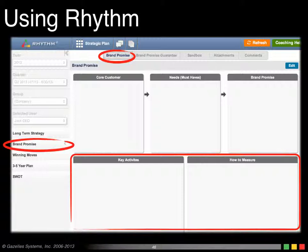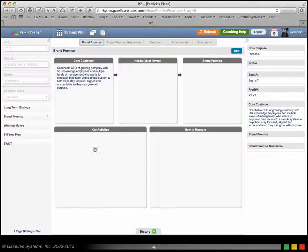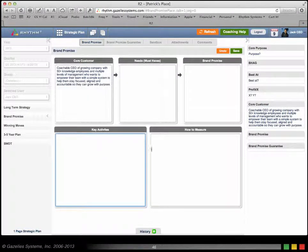In Rhythm, it's in the same area. Let me bring back the Rhythm screen so you can see what I'm referring to. It's right down here. You click on your key activities and you can document that, and you can click on how to measure and document it as well.